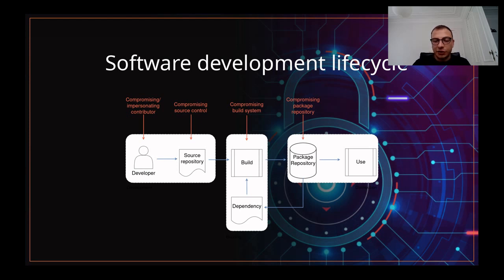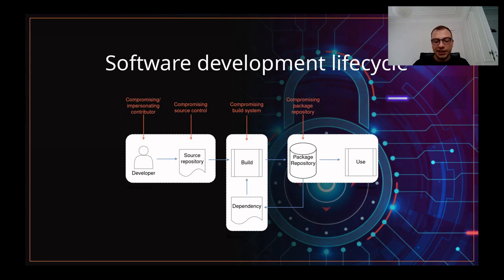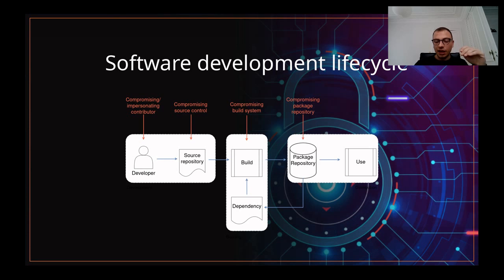Then we have the third stage, which is the distribution. Now that your software is built, you will push it to another server — the package repository — to make it available for the end user. The end user will just ask to download the package from this repository. Again, if someone manages to break into that server, they can give the end user a completely different software than what they expect. If we take the example of Spotify, you want to download the Spotify app, and someone gives you another software instead, which is, as you can imagine, really bad.